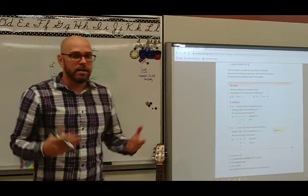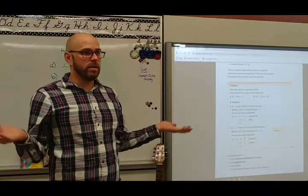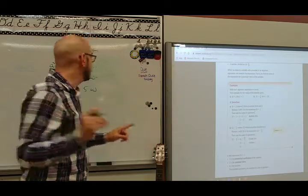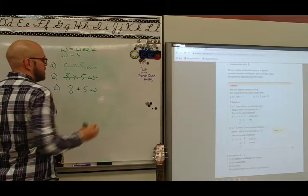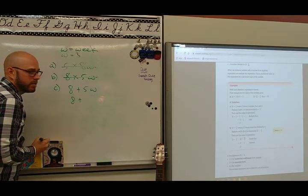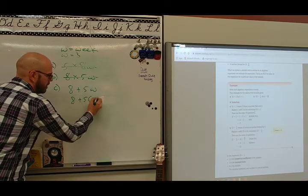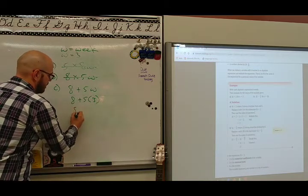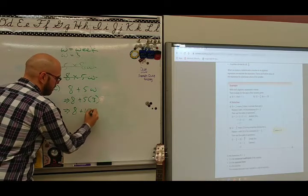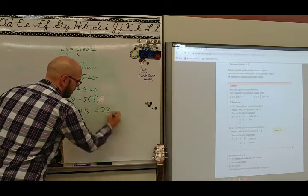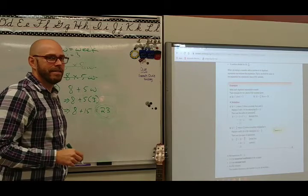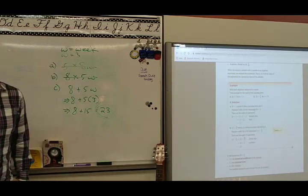Okay, now we're going to change it. How much is he going to have by Christmas? There's three weeks until Christmas. Don't say it. Solve it. There's three weeks until Christmas. We've now figured out that W equals three. So plug it in. We're going to have $8 plus $5 per week. Now we know how many weeks it is. That's rewritten as $8 plus $5 times.